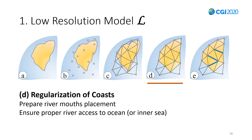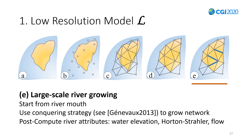For the next step we start the large-scale river network creation by cleaning up the coast — fitting the continents and coast to the edges of the mesh, then placing river mouths and ensuring each has proper river access to the ocean. The last step is the large-scale river network growing. We start from the mouth, use something similar to Genevaux 2013, and use a stochastic conquering strategy to grow the network. Following that, we post-compute river attributes and embed them into the mesh, like water elevation, the Horton-Strahler number, and the flow of the rivers.